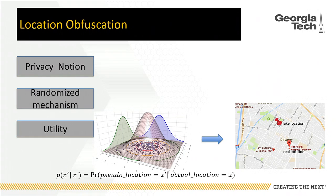In this paper, we focus on location obfuscation. To design such a mechanism, there are several basic questions we need to consider: How do we measure the location privacy provided by a location obfuscation mechanism? What kind of privacy notion should we use? How do we randomly transform real locations to fake locations? And how do we minimize utility loss?